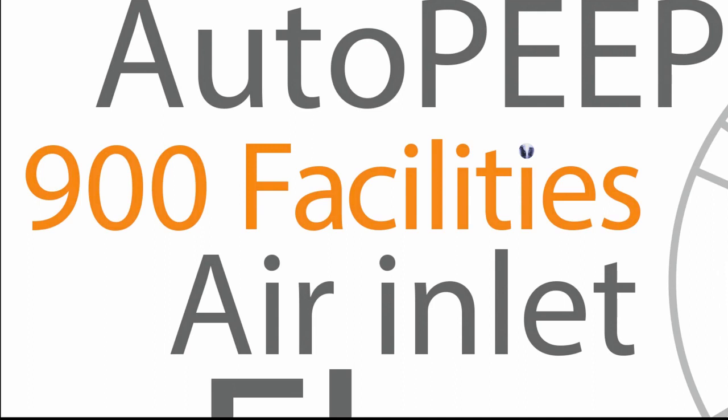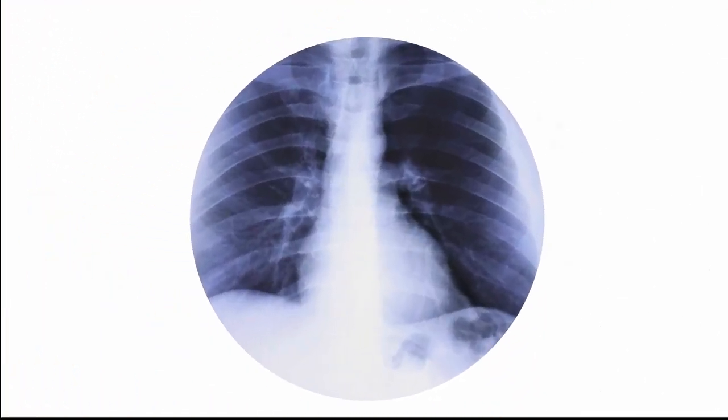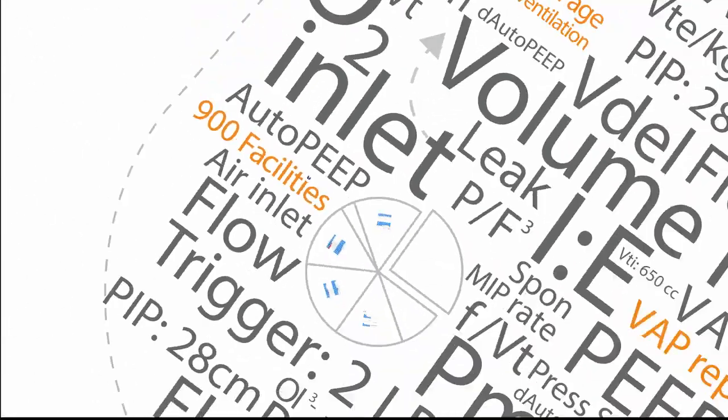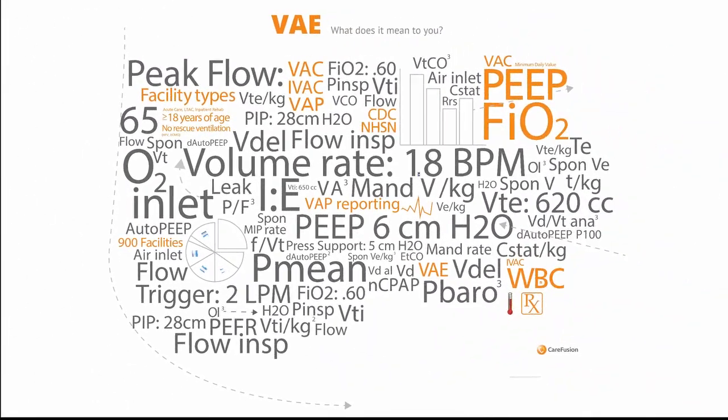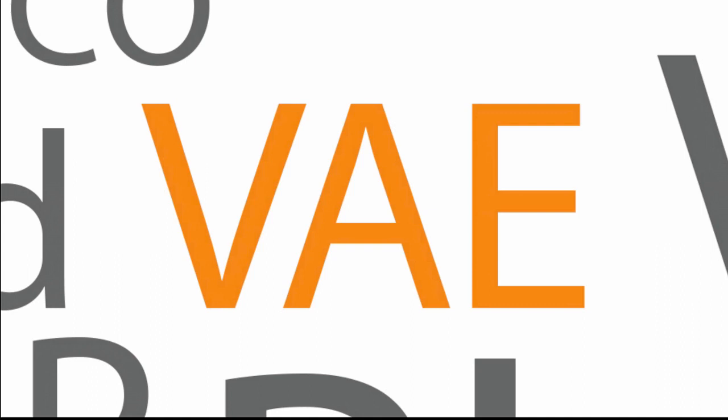One of the reasons the CDC decided to change the VAP surveillance protocol was that it was too subjective. One of the most subjective aspects was the interpretation of the chest X-ray. For the last several years, the CDC has been working on a new surveillance algorithm to replace VAP reporting, and on January 1, 2013, they introduced the ventilator-associated event surveillance algorithm.